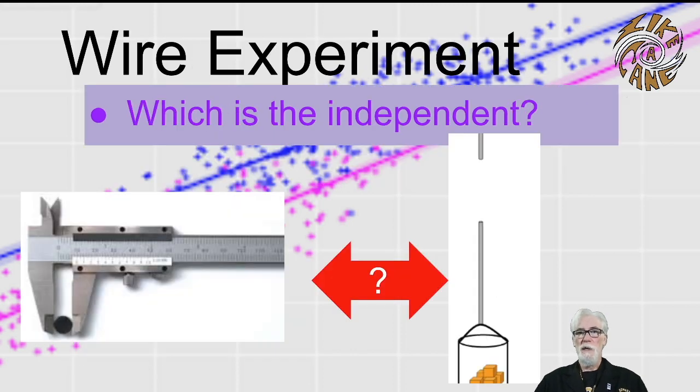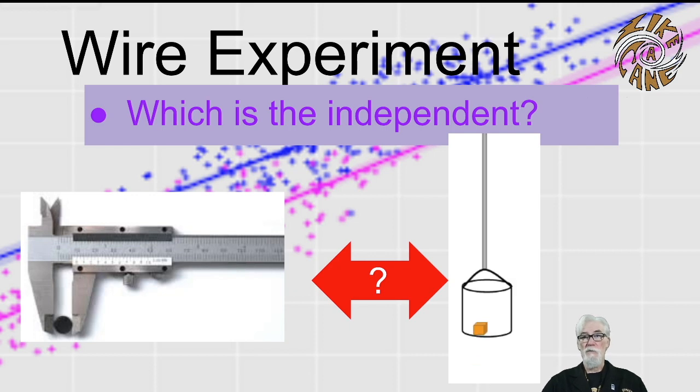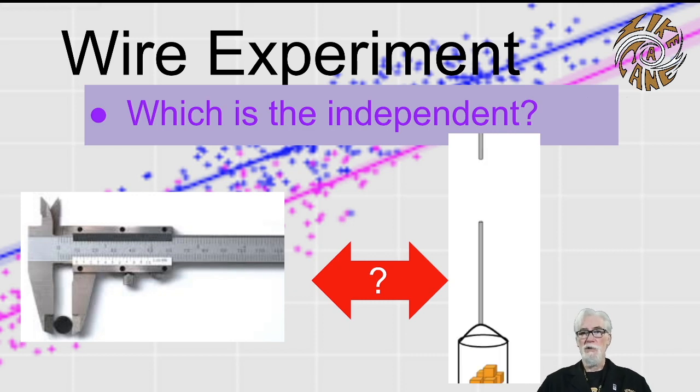In our experiment, it probably makes the most sense to control the diameter of the wire and observe the breaking strength, rather than choosing some breaking strengths ahead of time and then trying to guess what wire diameters we would have to have to match those strengths.